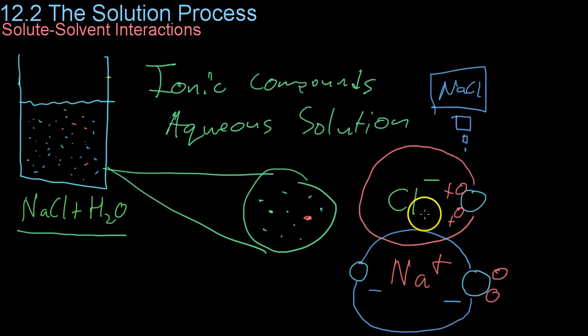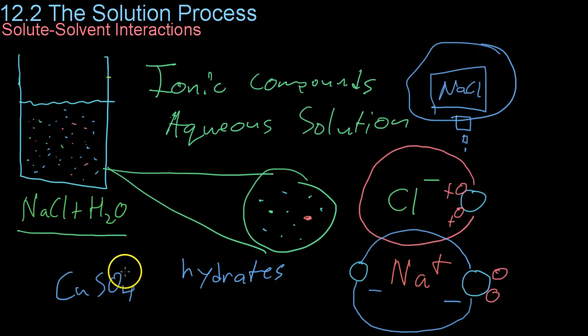Now some of these compounds surrounded by water, not particularly salt and chlorine ions, but for example copper sulfate, can often form what are known as hydrates. And hydrates are simply crystalline structures, but it's an ionic compound surrounded by water.